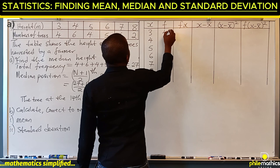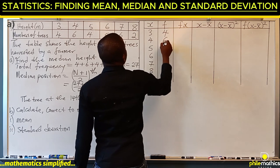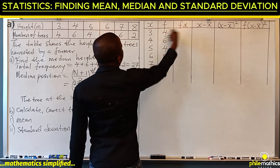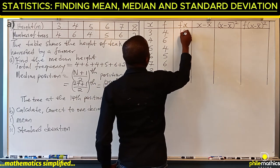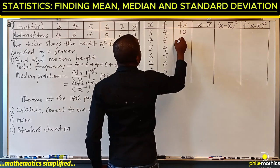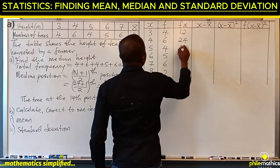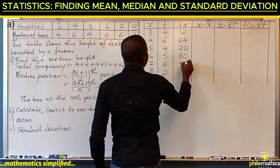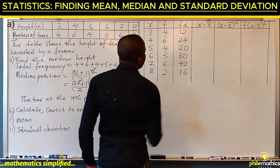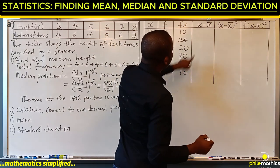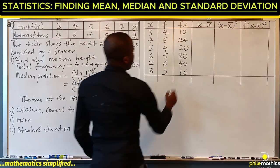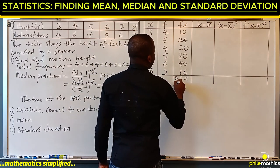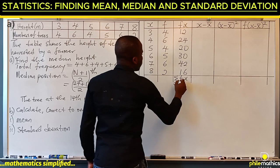The frequencies are four, six, four, five, six, and two. Multiplying each x by its frequency gives us 12, 24, 20, 30, 42, and 16.